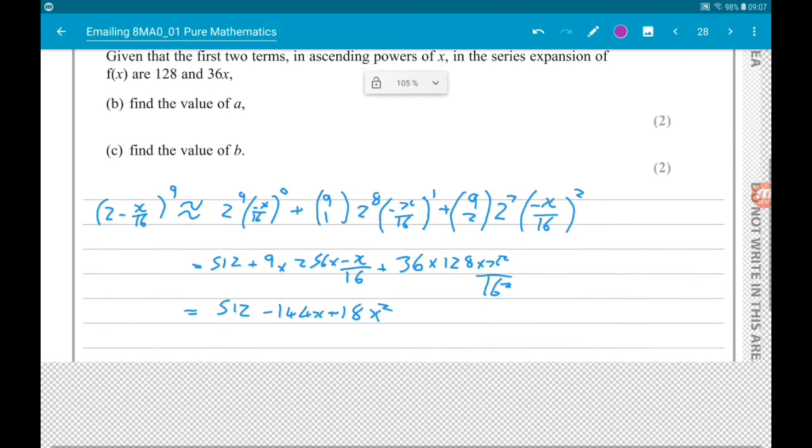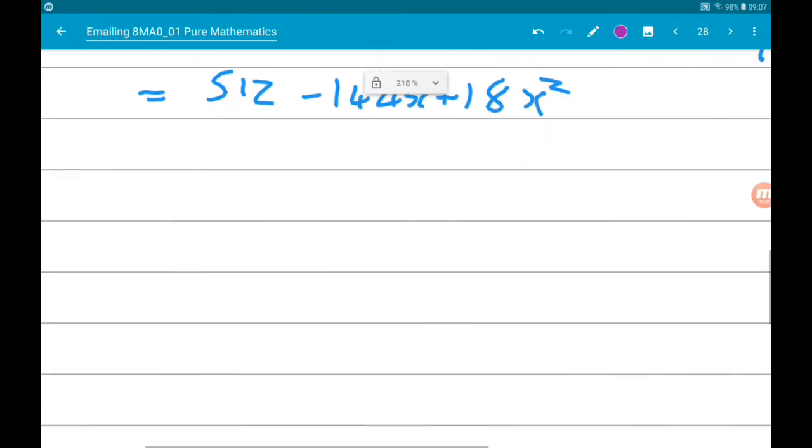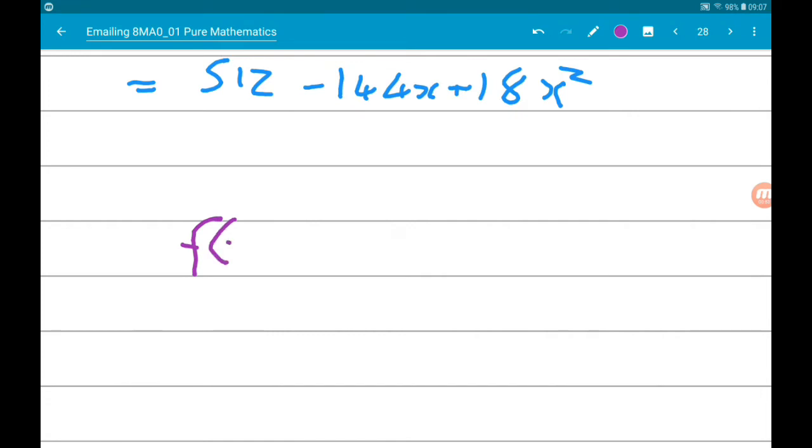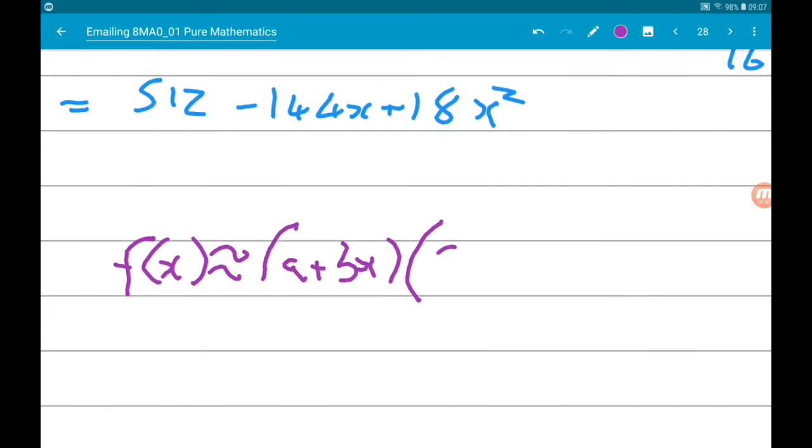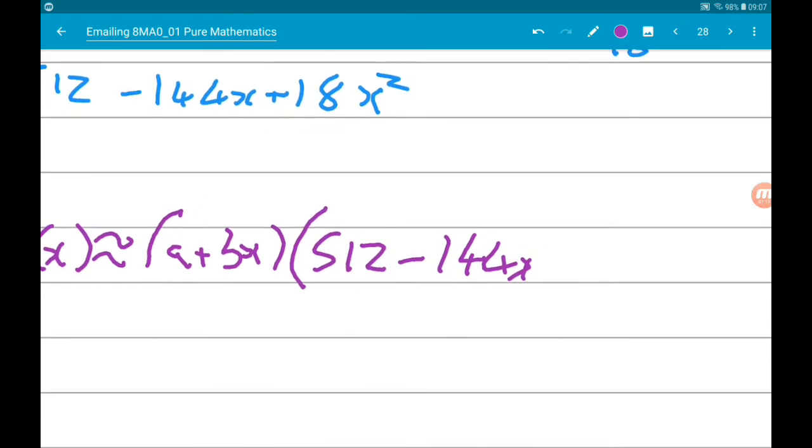So we can write f of x as being approximately equal to a and bx times what we've just done in part a. So times 512 minus 144x add 18x squared, and then that would carry on but we only know the first three terms.